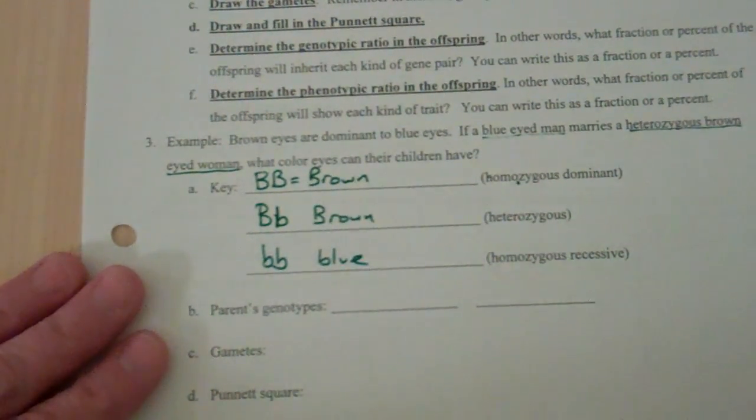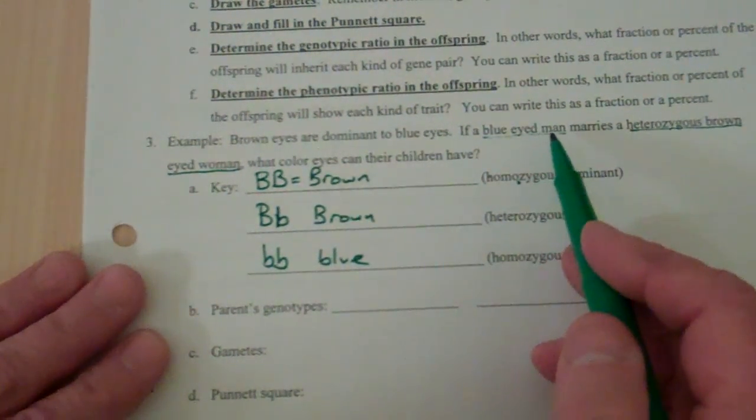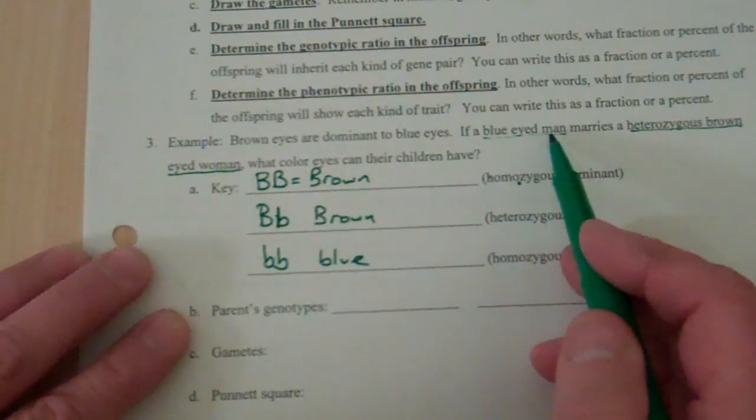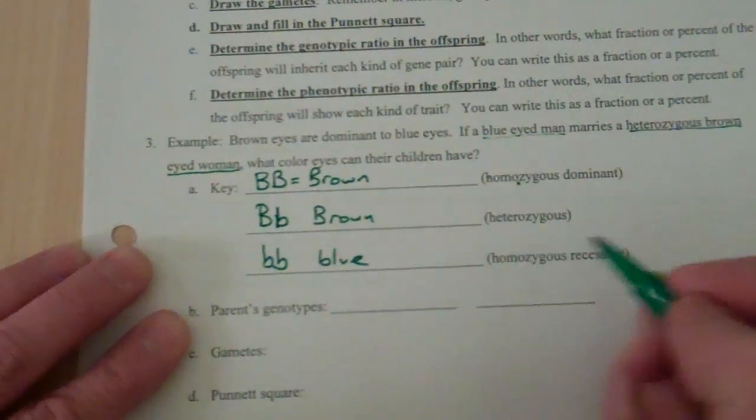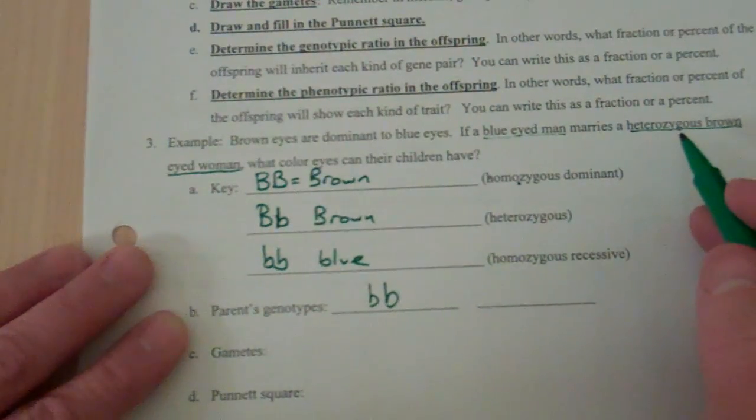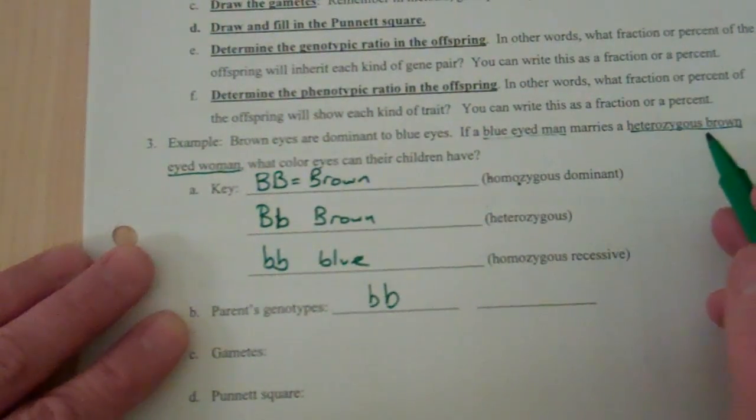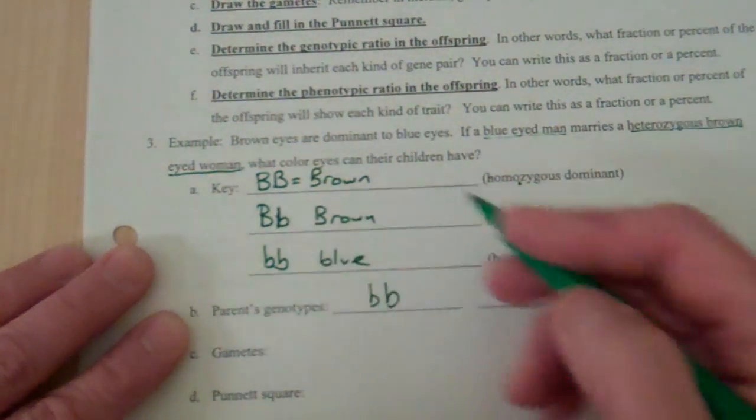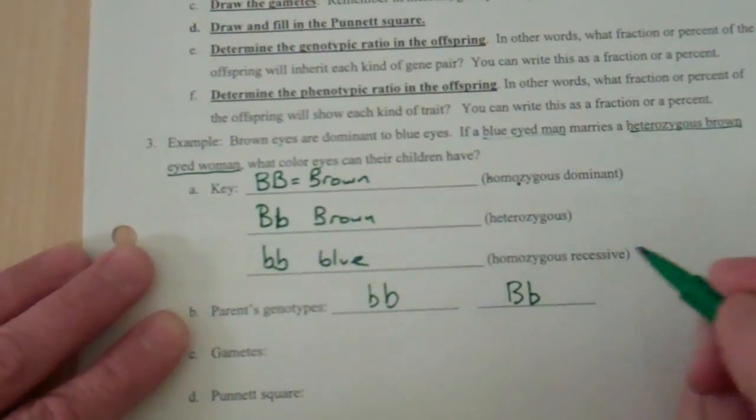So you look back up in your problem, and it says you've got a blue-eyed man. Well, what genotype would that be? Little b, little b. And is marrying a heterozygous brown-eyed woman. So heterozygous is this one. We're going to list her genotype.